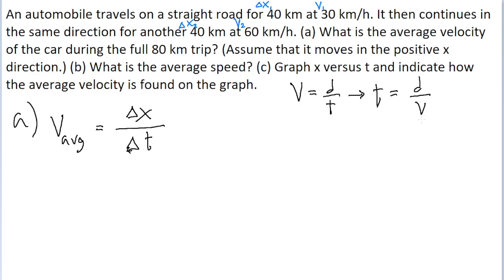If we want to find the total amount of time, the total time interval for the journey, we need to find t sub 1 and t sub 2, the times for the two different parts of the journey.